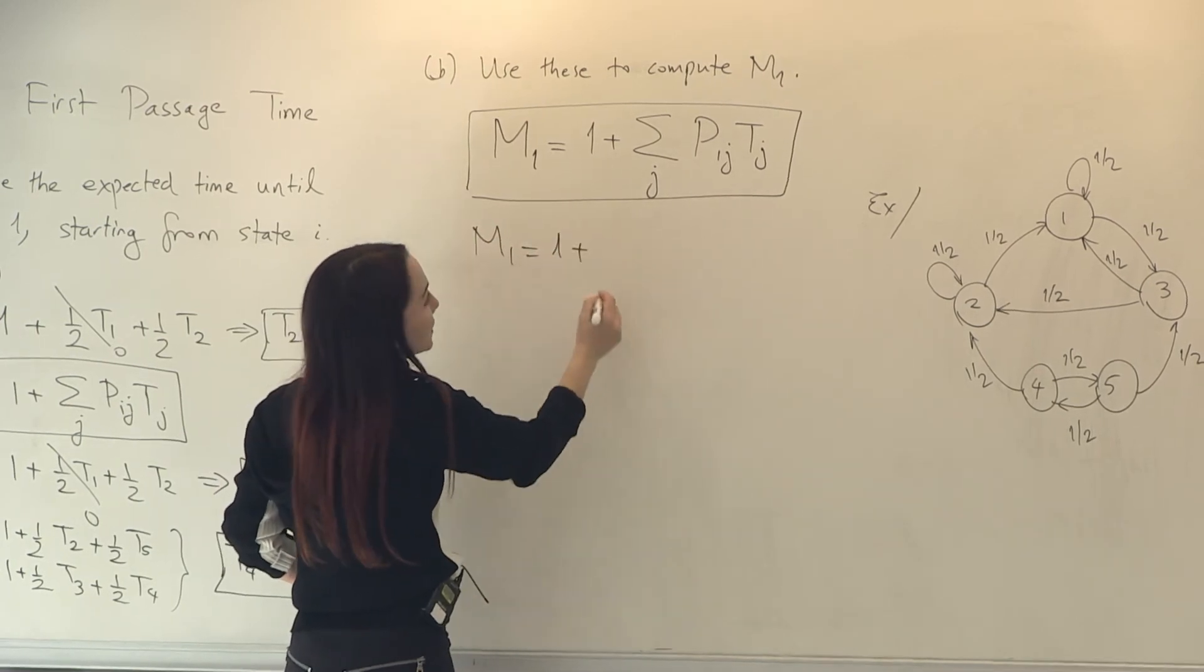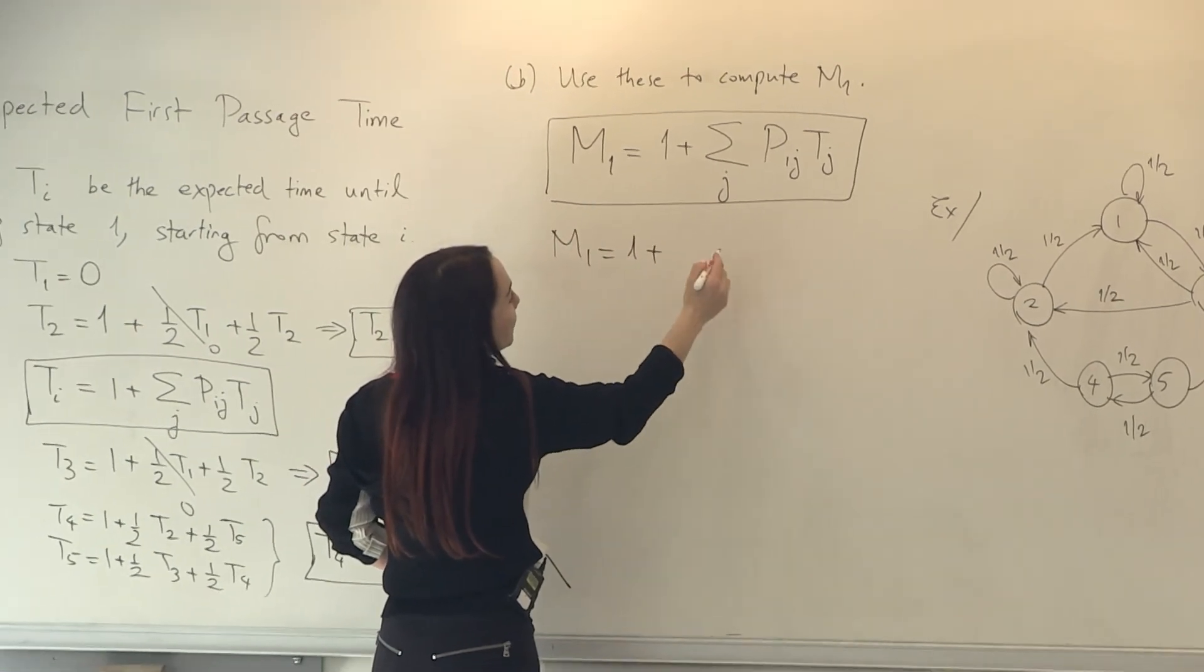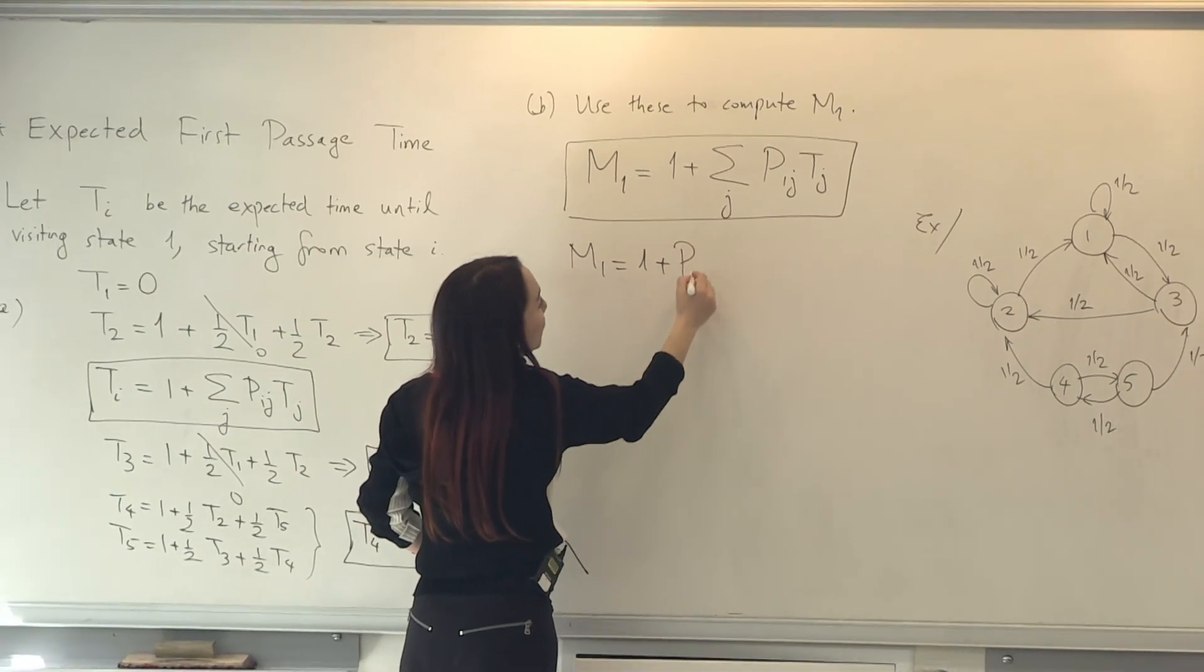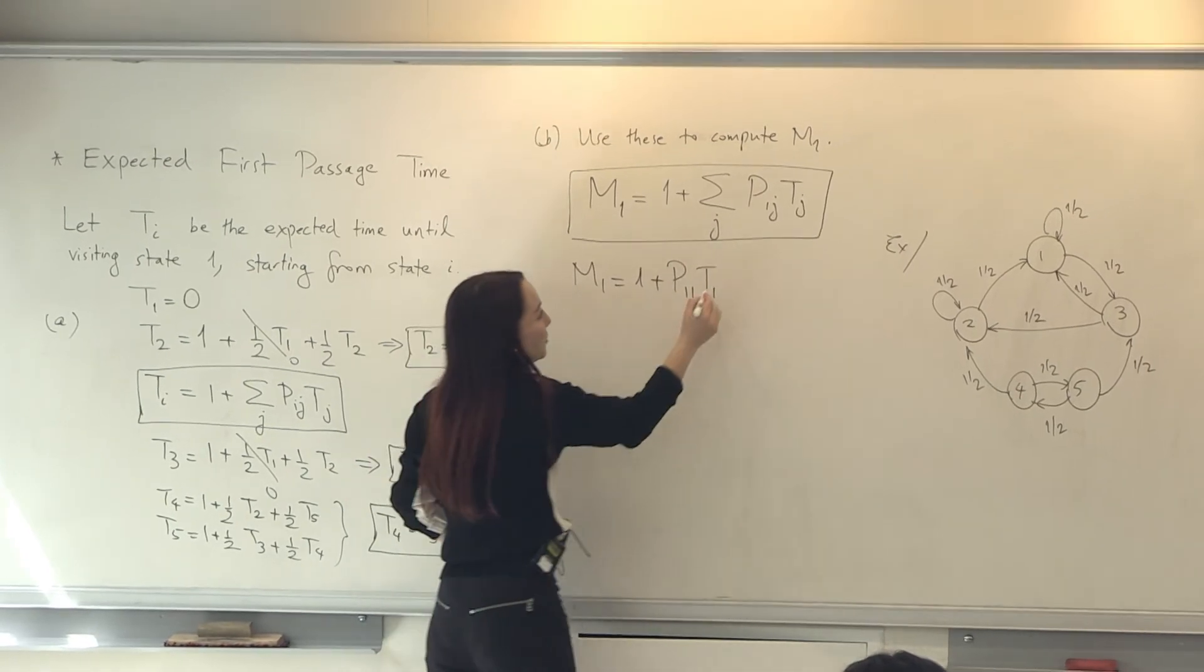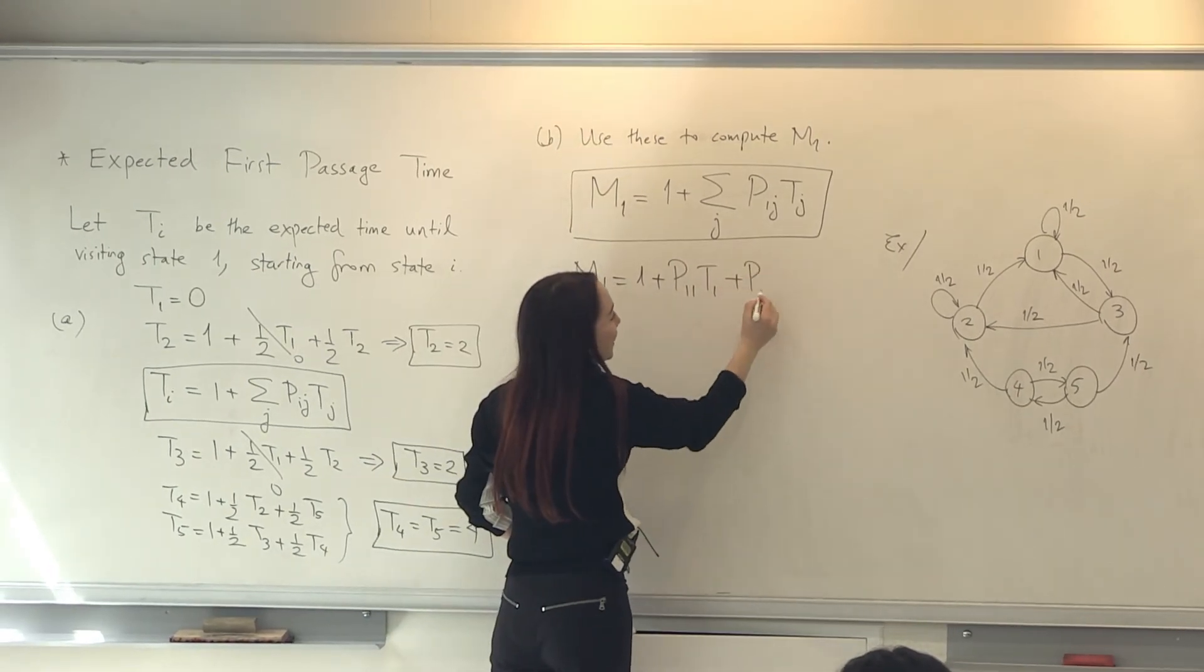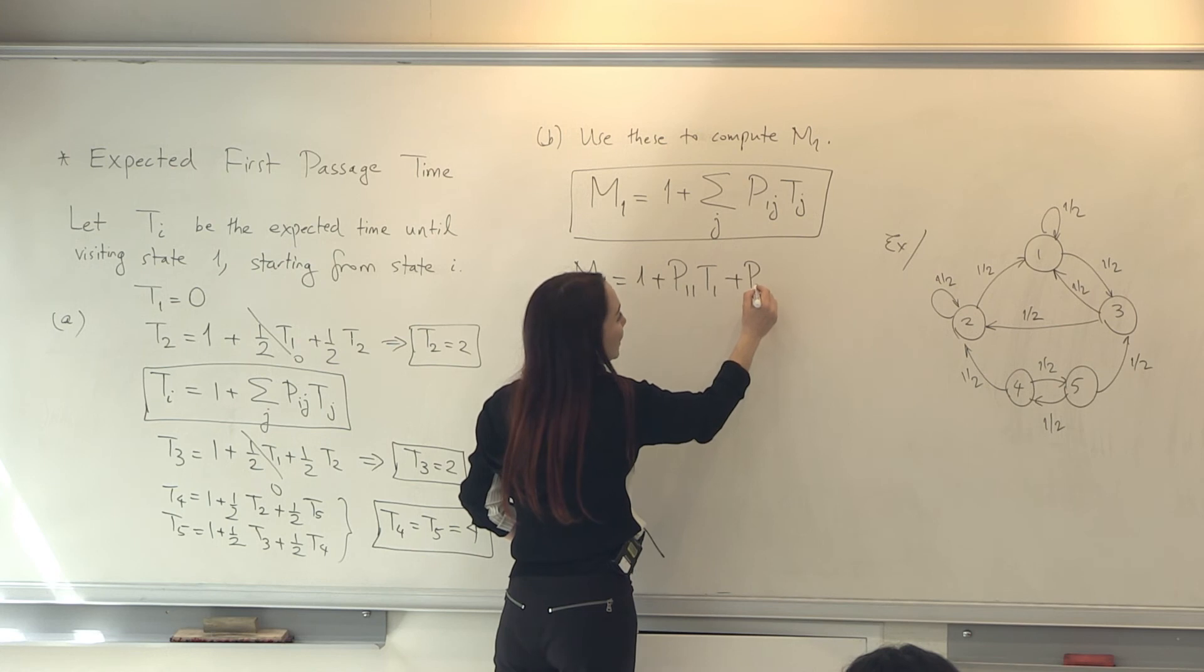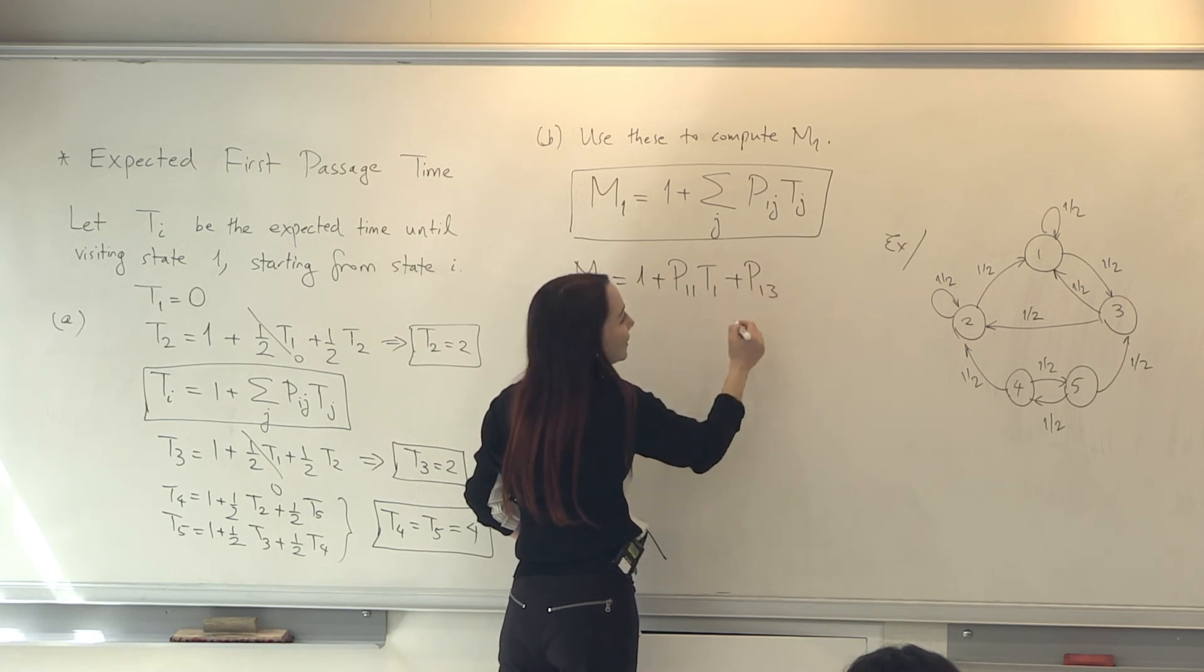M1 is equal to 1 plus P11 times T1, right? This includes 1 itself. Plus P13 times T3.